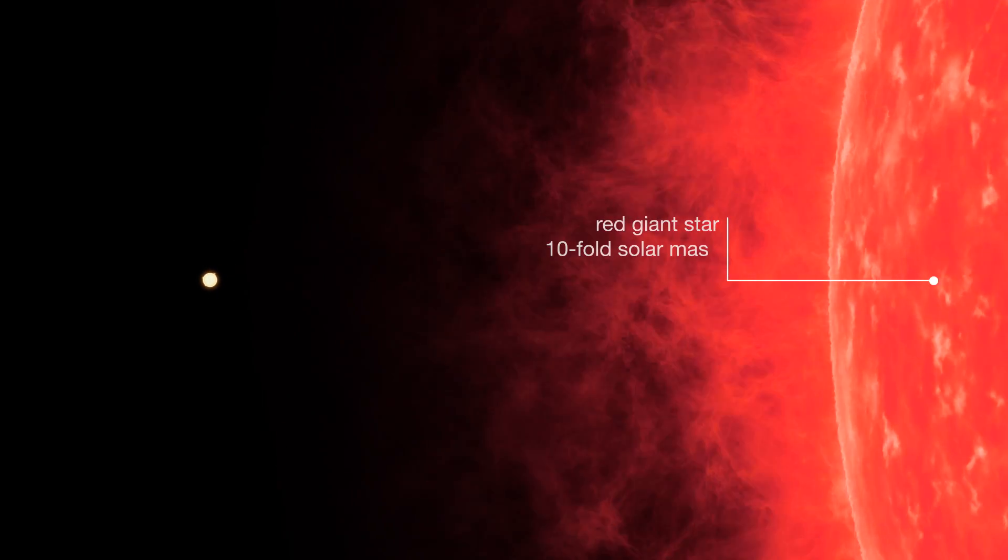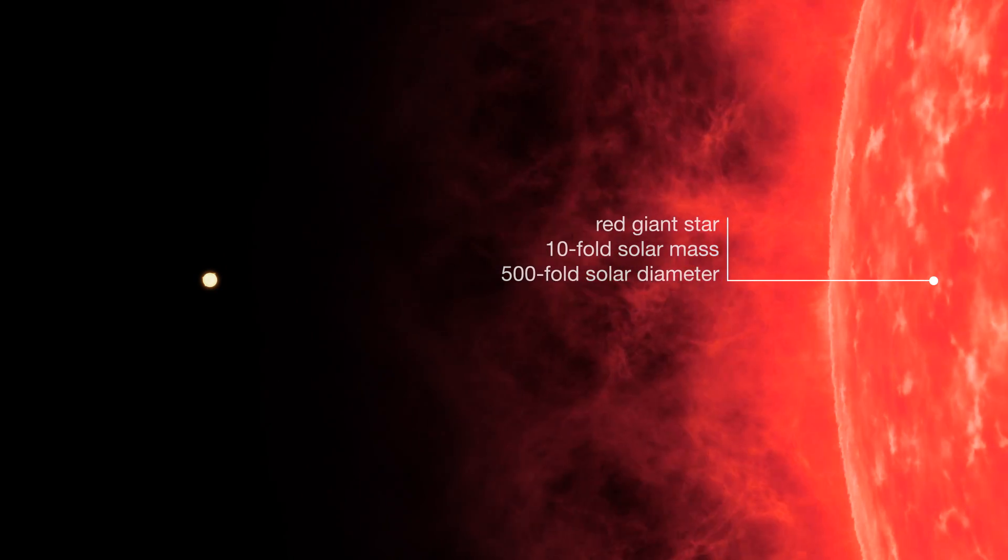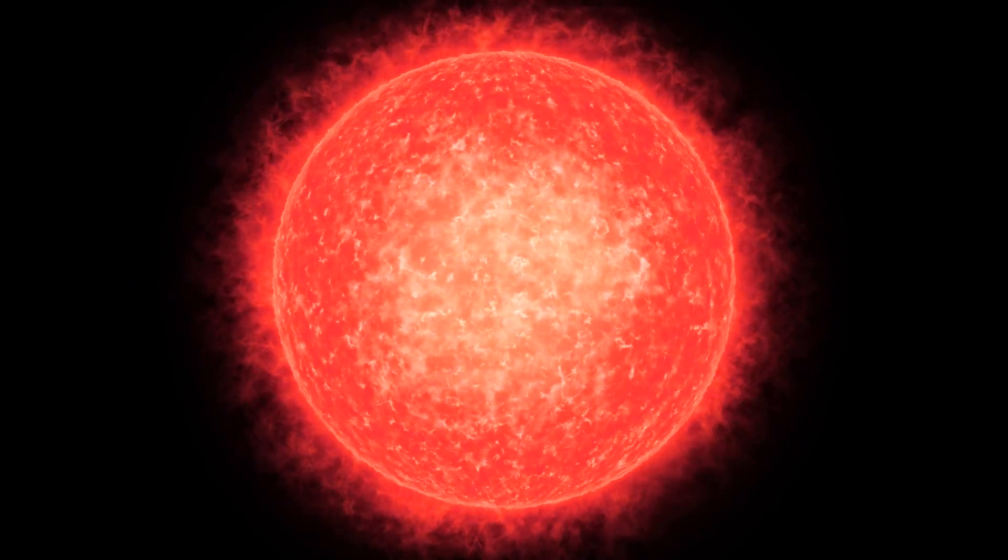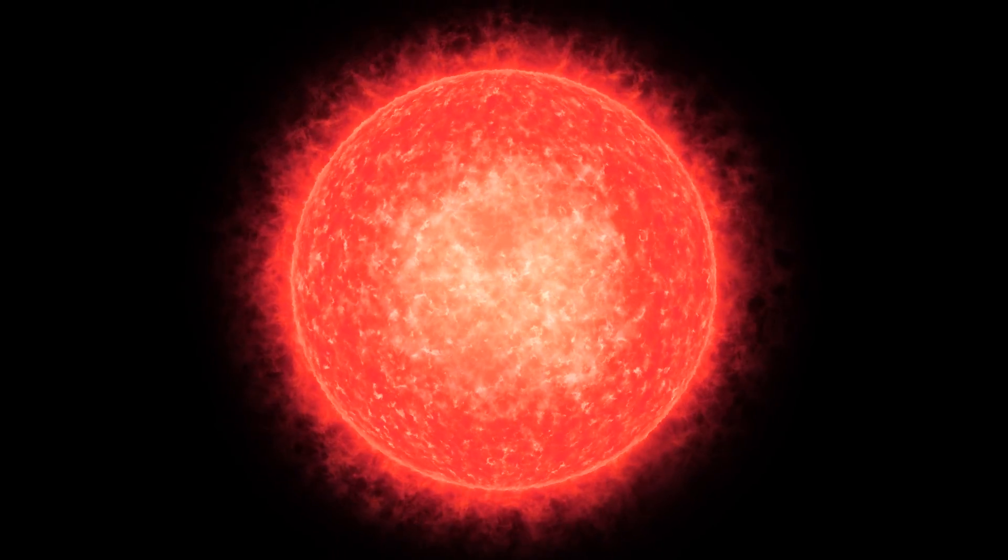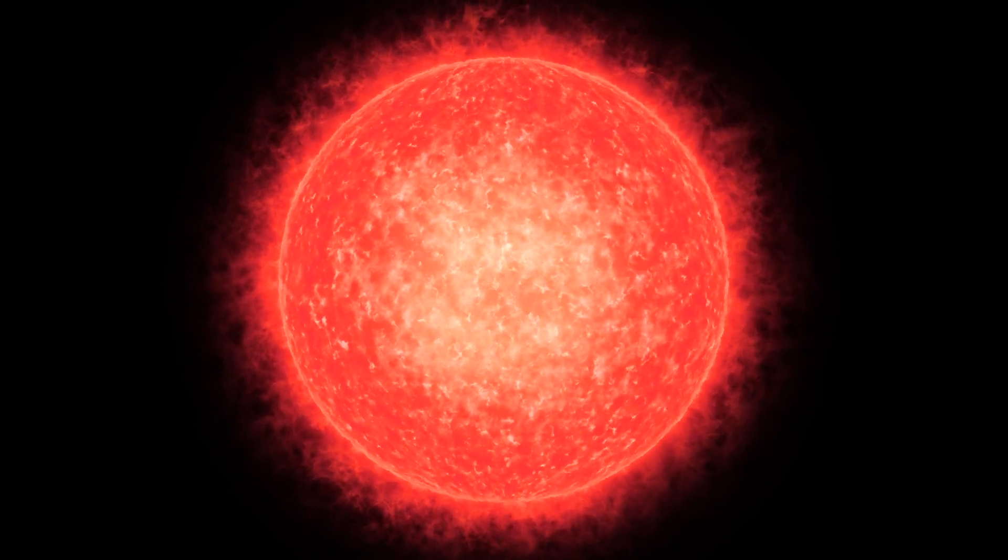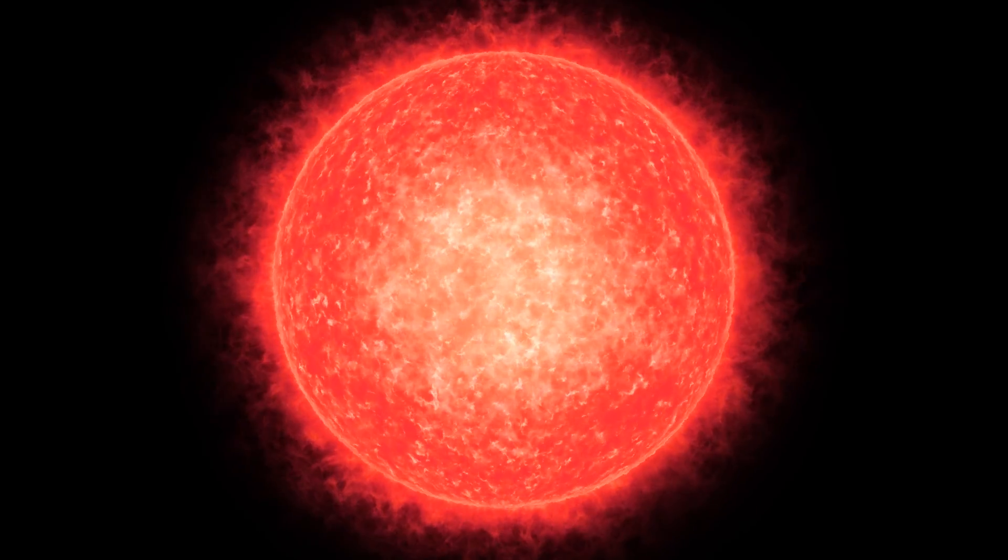This is a red giant star. It has 10 times the mass and 500 times the diameter of the Sun. Next to this giant, we wouldn't even notice our Sun. The red giant has reached the end of its evolution. It is unstable and will explode in a few moments.